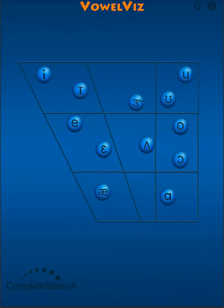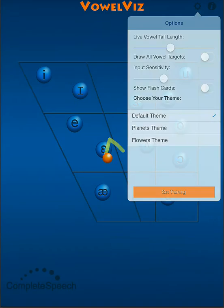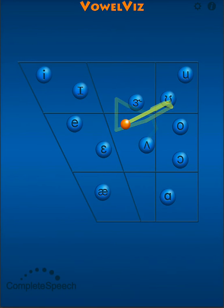Today we are going to look at the 4 Pure Vowel Vocalic Rs: R, Or, Ear, and Air. It's important to remember to check the input sensitivity and set it to an appropriate level based on the setting where you're working and according to the level of ambient noise.